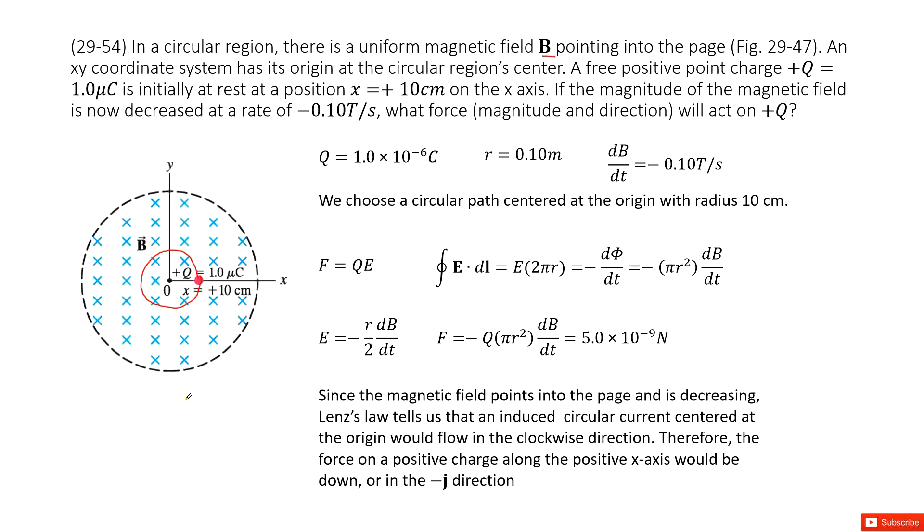Yes. So we can see the induced current. We can see the field is pointing in and decreasing. So that means the induced current will compensate this decrease. So now we use the right-hand rule. The thumb pointing in, so our forefinger will rotate clockwise.